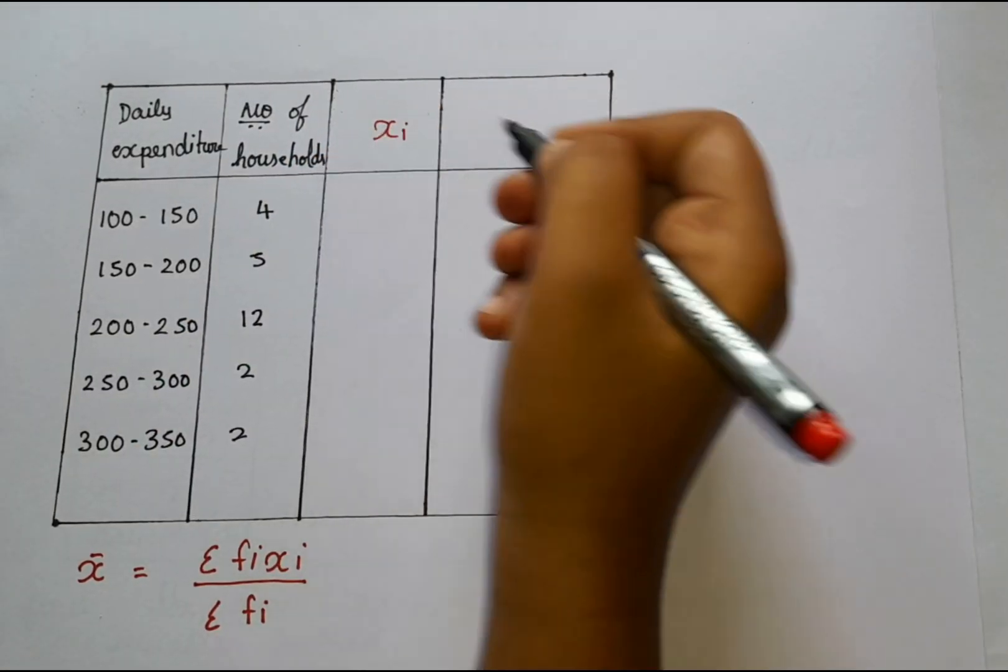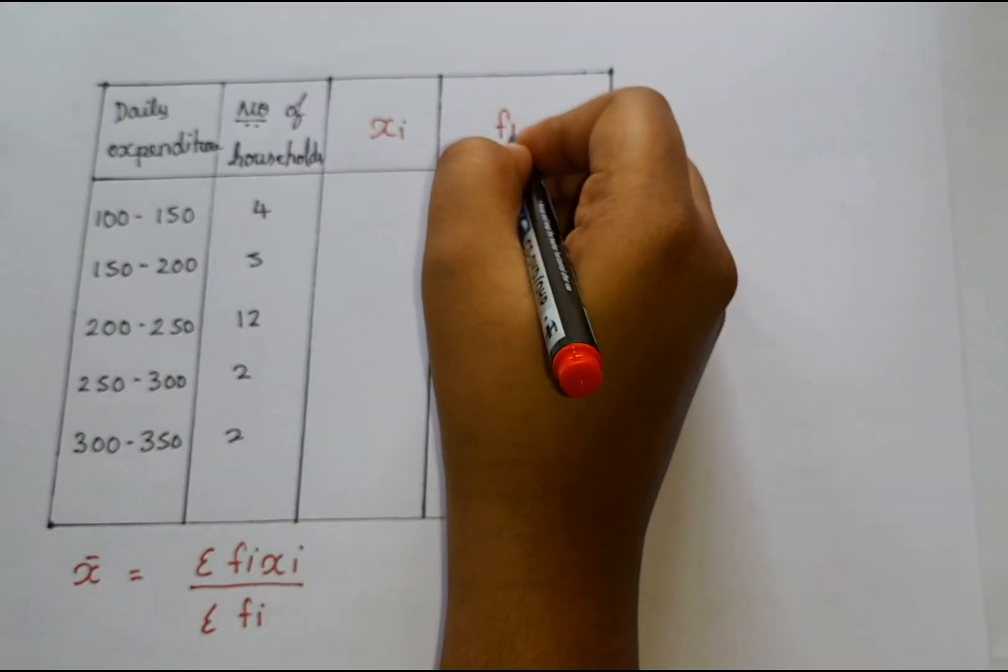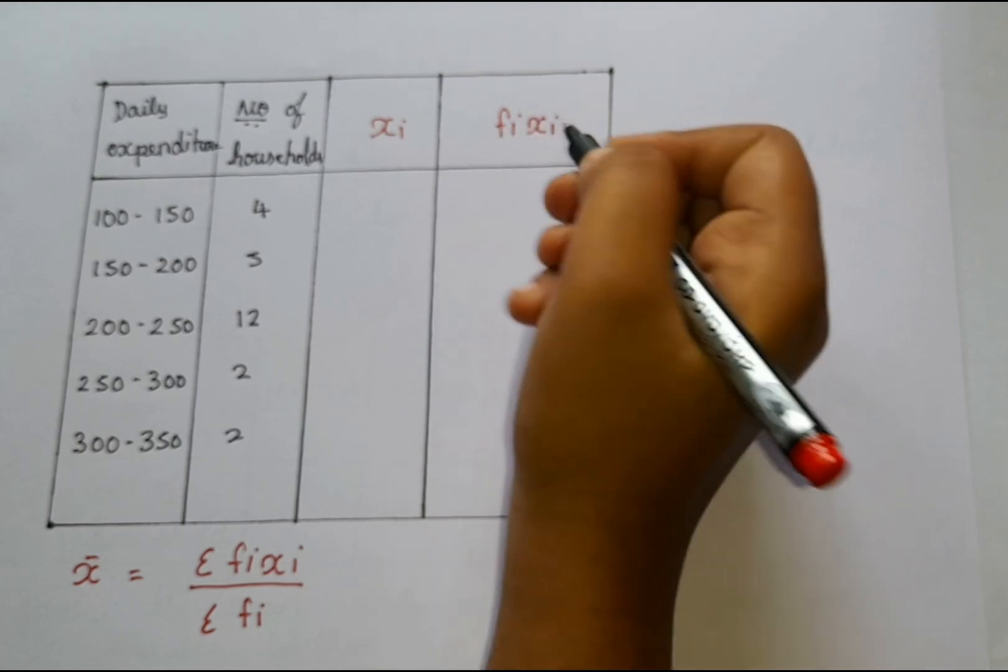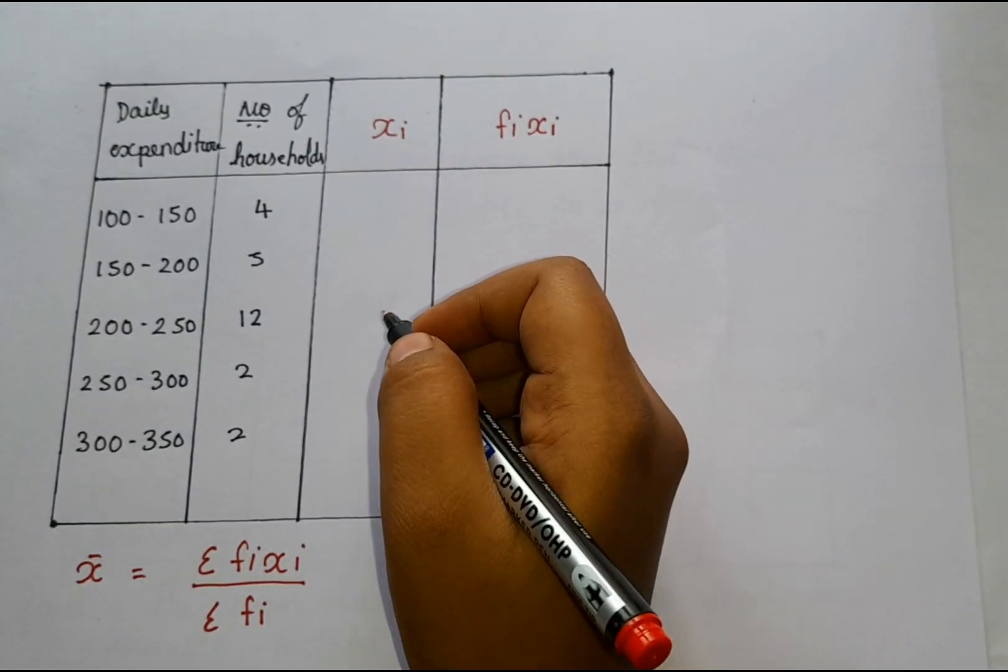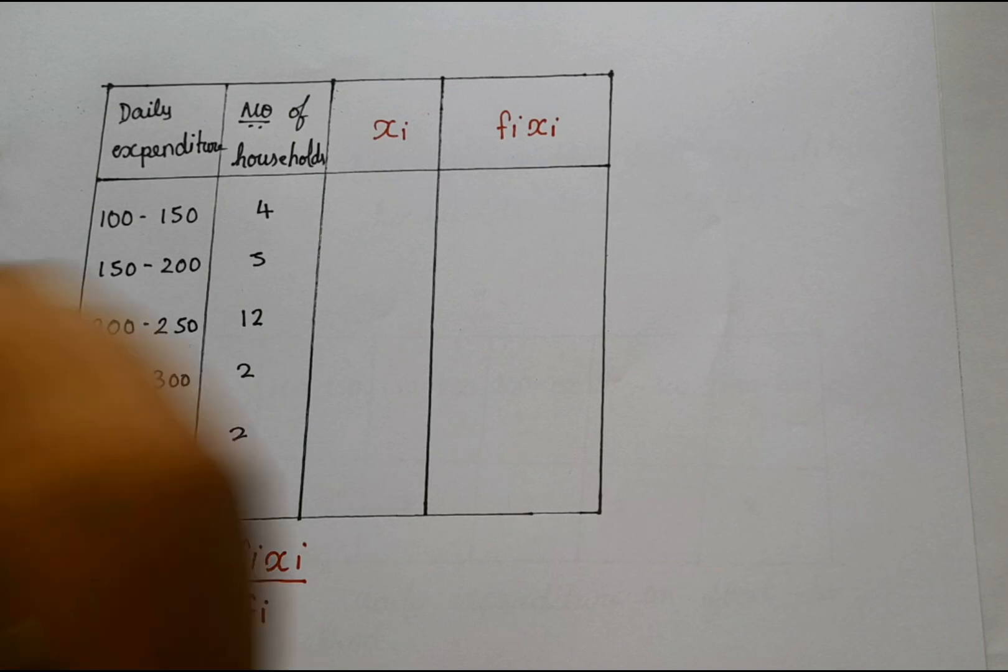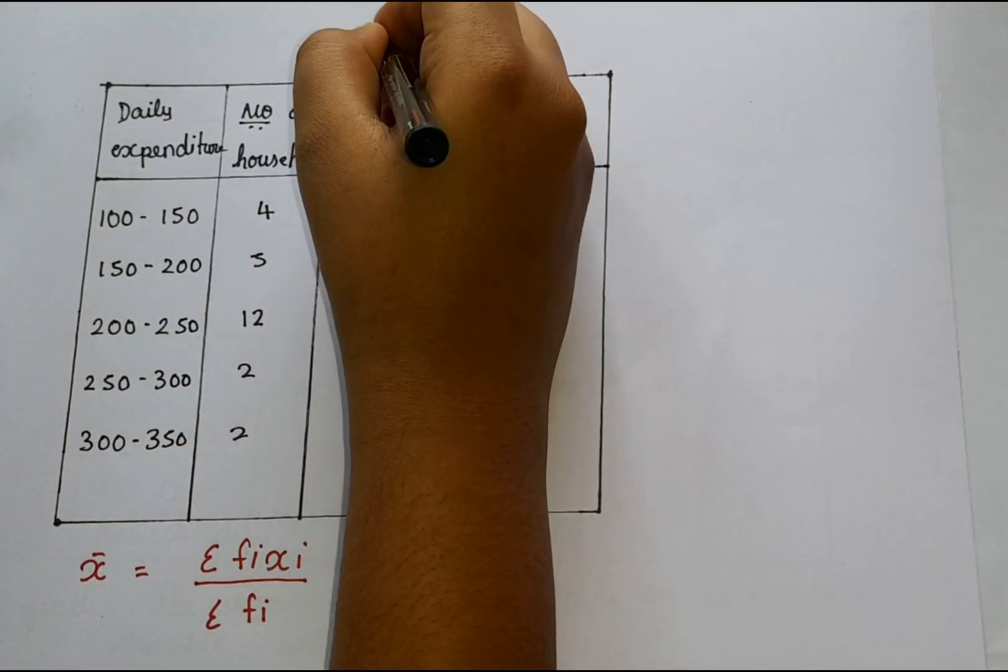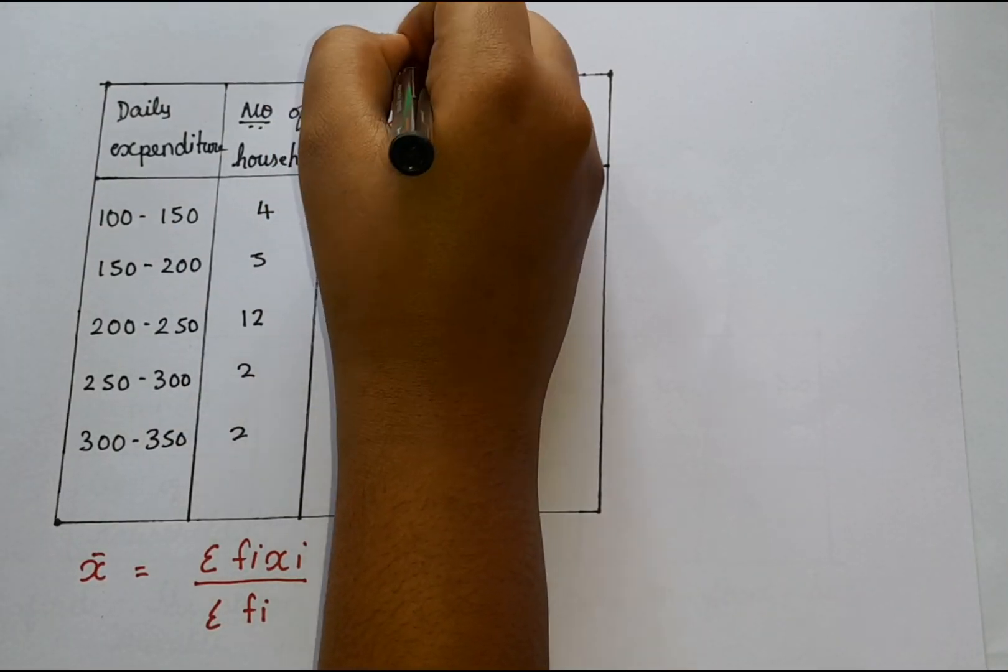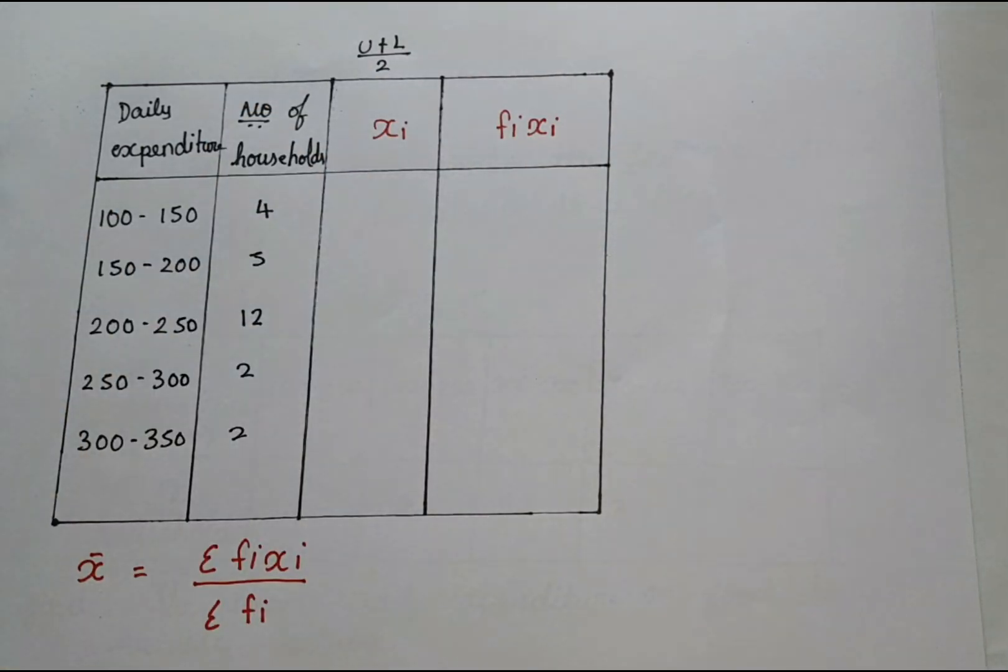First when I find the Xi value, then I am supposed to find the Fi Xi value. Of course, you guys know we are supposed to do it like this. So how to find Xi? Xi is upper limit plus lower limit divided by 2.